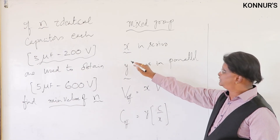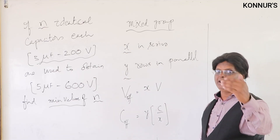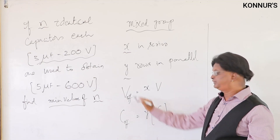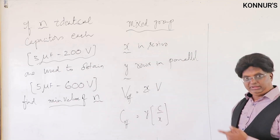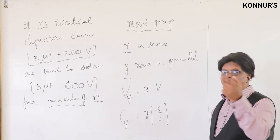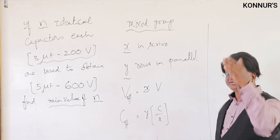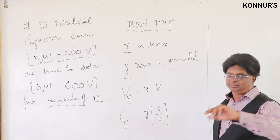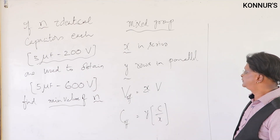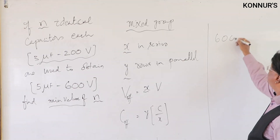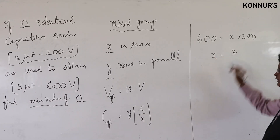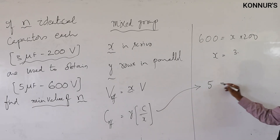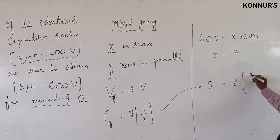Reminder: x capacitors in series per row and y such rows in parallel. V_effective = x × V (voltage rating of each), and C_effective = y × (C/x). Substituting: 600 = x × 200, giving x = 3. And 5 = y × (3/3), giving y = 5.